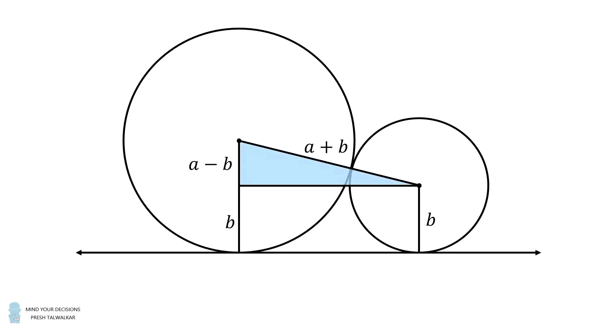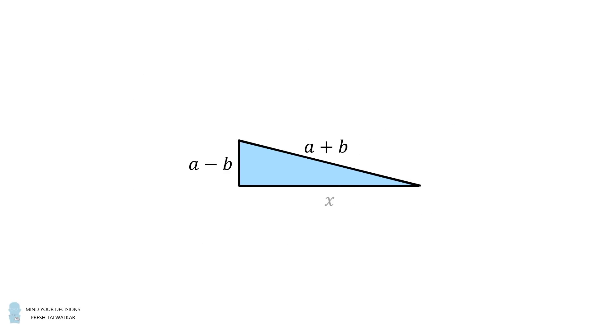From here, we can focus on this right triangle, and this horizontal leg is exactly the length of the common external tangent. So we just need to solve for the length of this leg.